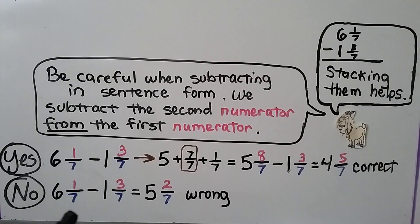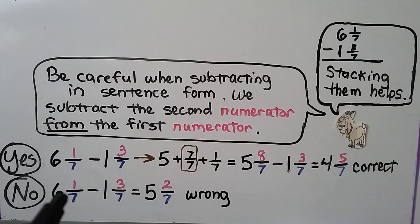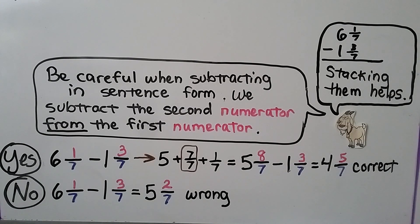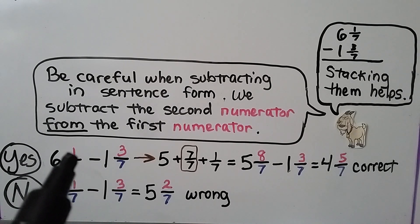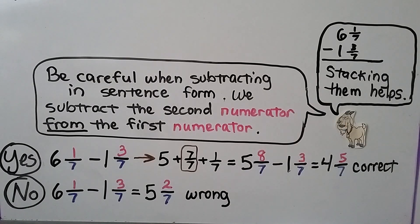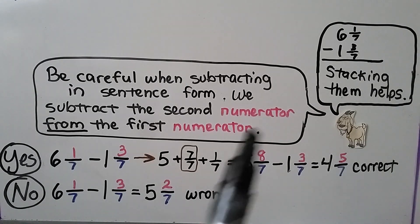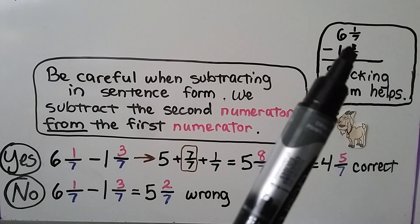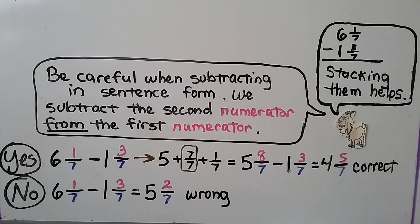A common mistake is doing 3 minus 1 going the wrong direction, getting a 2, and then 6 minus 1 is 5, arriving at 5 and 2 sevenths — and that is wrong. So be very careful to make sure you're taking away the correct number. Stacking them helps us easily see that we need to rewrite this so that we can take that 3 away from the numerator.